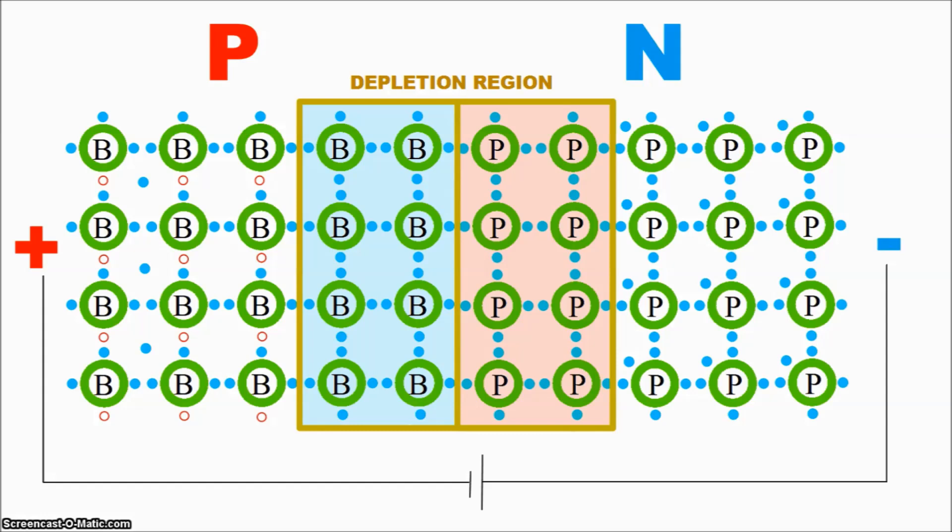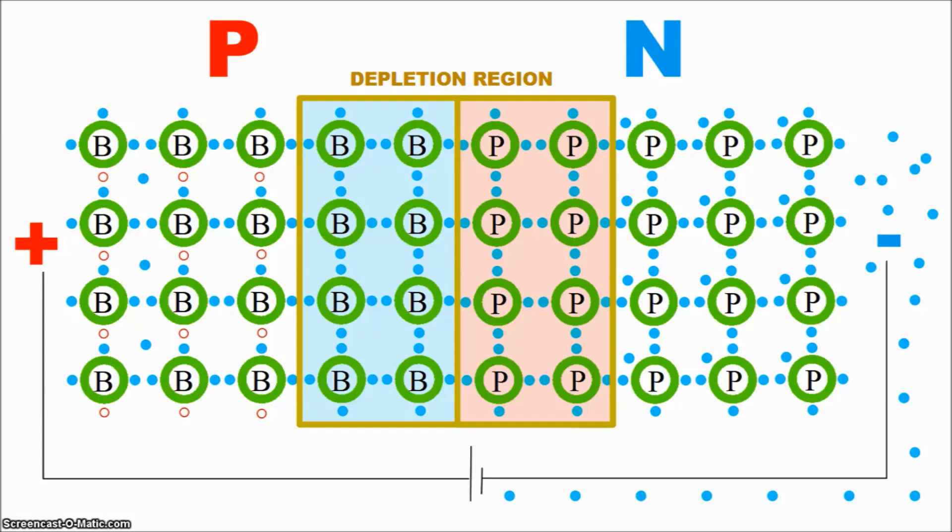We'll attach the positive side to the p-type silicon and the negative side to the n-type silicon. This time, the negative side adds electrons to the n-type silicon. The n-type silicon now has a massive excess of electrons, which are all attracted to the massive number of holes in the depletion region. So they come to those holes, and they drop down into them, and they cancel them out. The depletion region gets smaller and might almost disappear if there are enough electrons coming through at once.